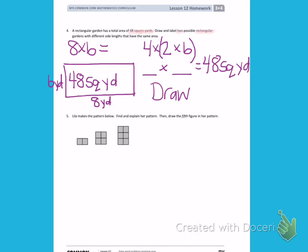Number 5. Lila makes the pattern below. Find and explain her pattern. Then draw the fifth figure in her pattern. So first, I need to find and explain her pattern.